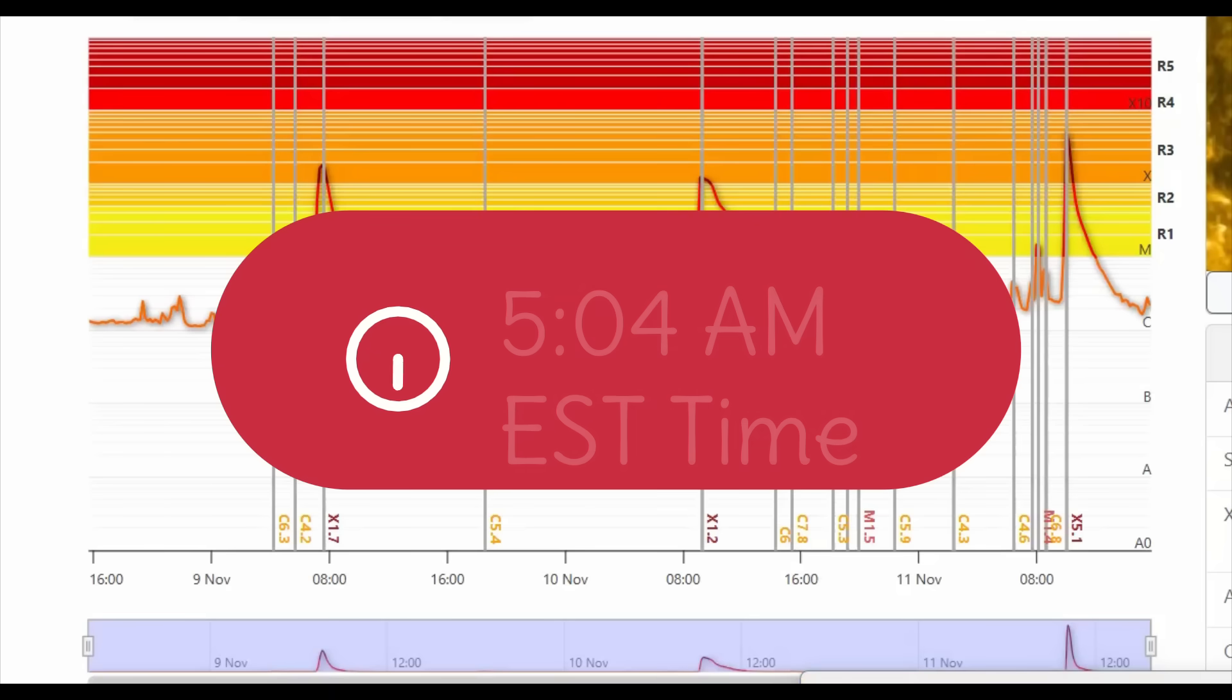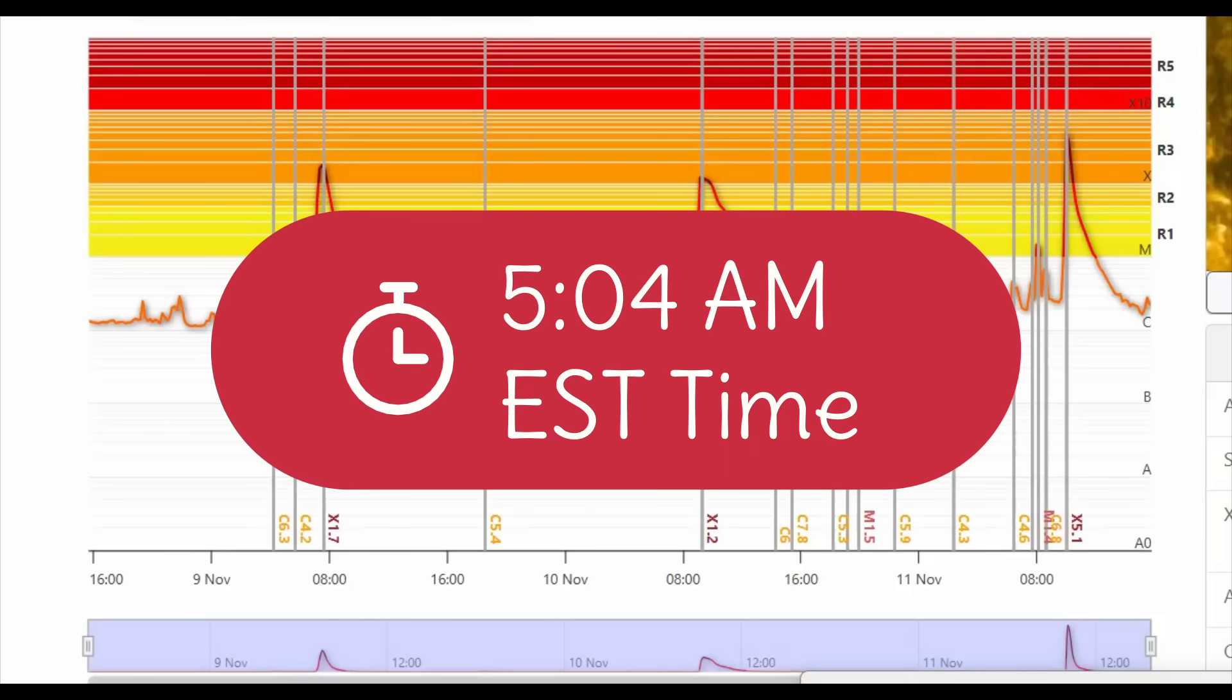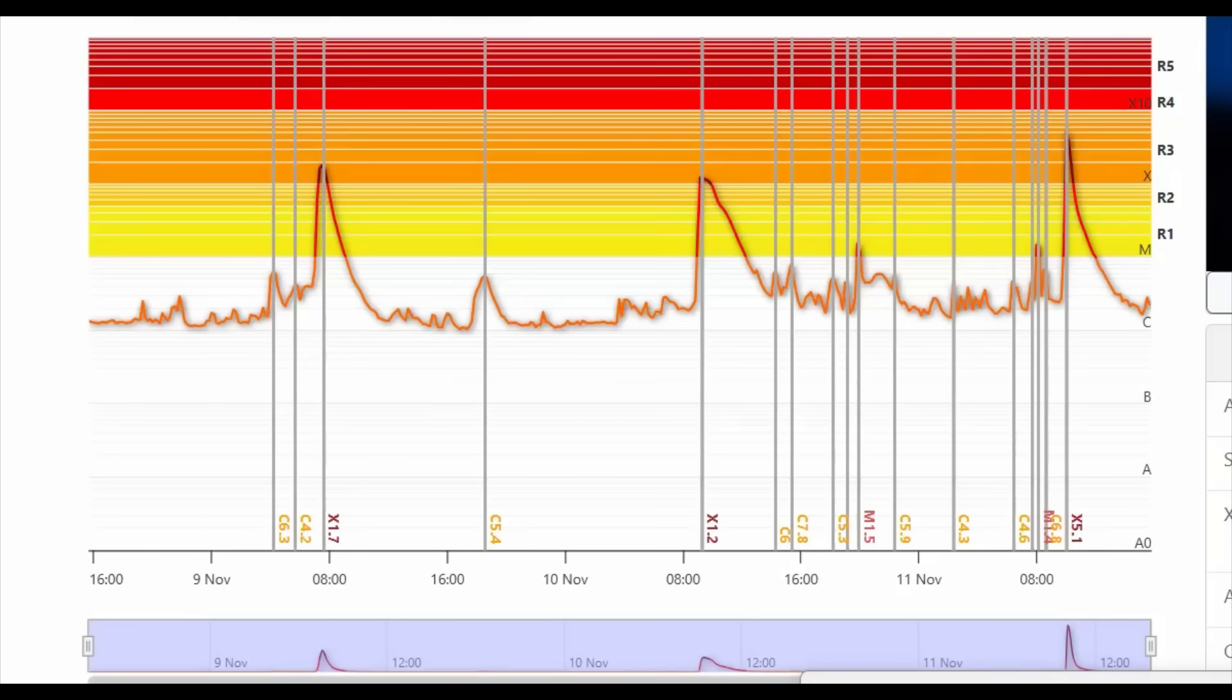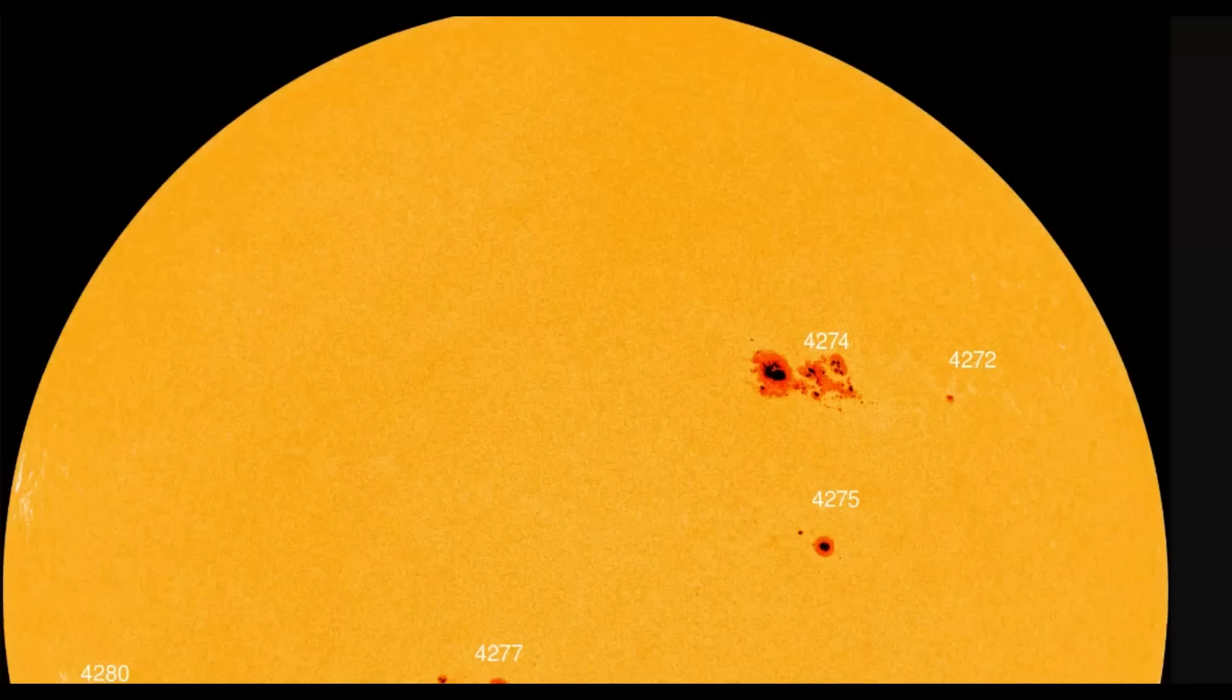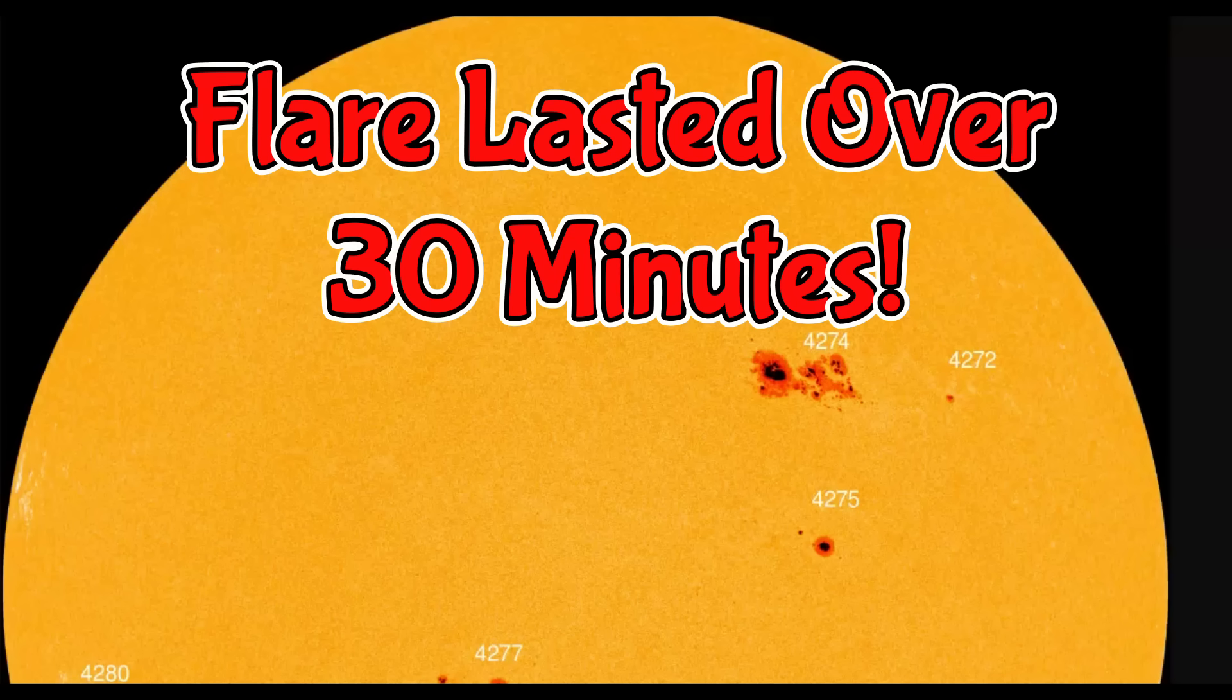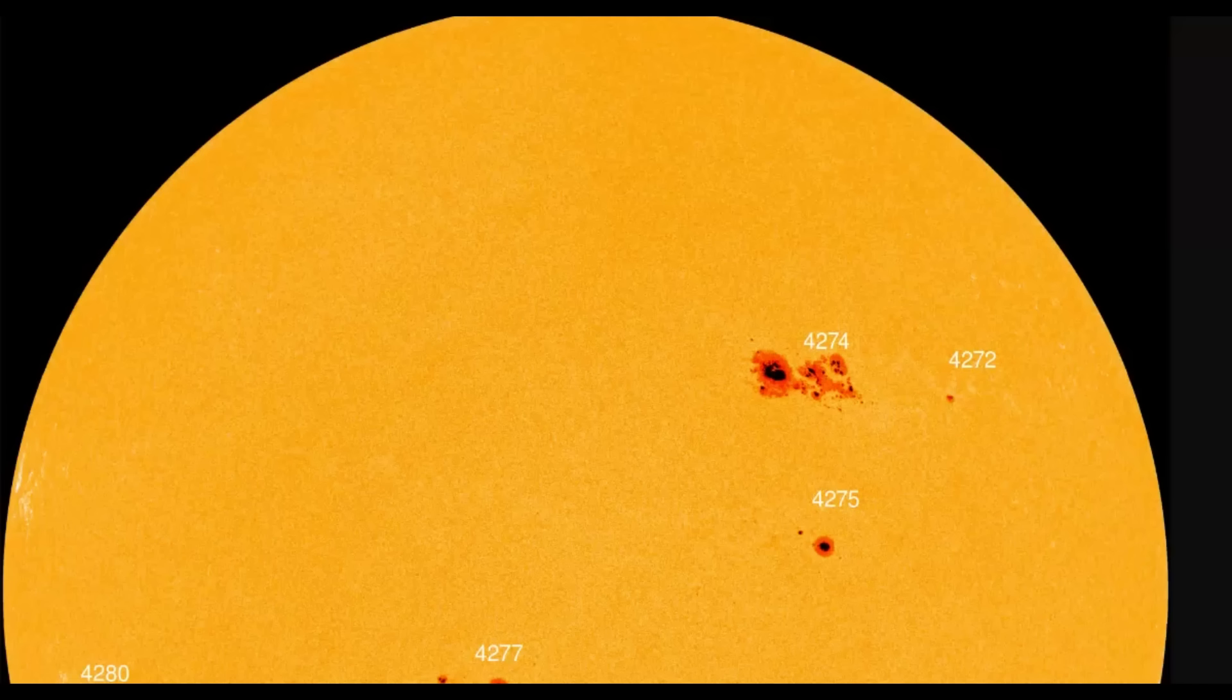It occurred at 5:04 Eastern Standard Time, or 10:04 Universal Time, or 4:04 a.m. Central Daylight Time. That's probably why I woke up. AR 4274 is a beta-gamma-delta configuration, Earth-facing and highly unstable. It was a long duration event lasting over 30 minutes.